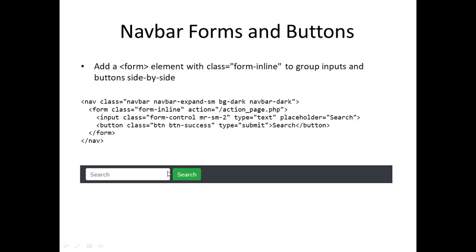We can also have a navigation bar with forms and buttons. We add a form element with class form-inline to group inputs and buttons side by side. We'll have a separate video for forms, but for now the form has an action attribute pointing to the page that opens on submit, and it contains an input text box and a button. Just place the form inside your navbar.